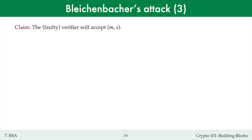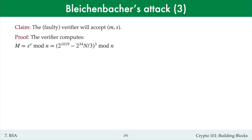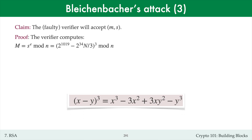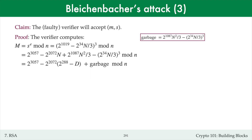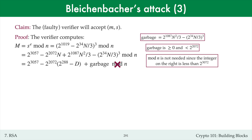Let me prove that the signed message that the adversary produces will be accepted by the faulty verifier. The verifier begins by computing capital M as s to the power e modulo n, where e equals 3. I'll expand this binomial term using the expansion for (x minus y) cubed: x^3 minus 3x^2·y plus 3x·y^2 minus y^3. I'll next replace N by 2^288 minus D and call the two remaining terms on the right 'garbage.' You should check that garbage is non-negative and less than 2^2072. The mod n is not required since the number is non-negative and less than n, so the mod n operation is redundant.